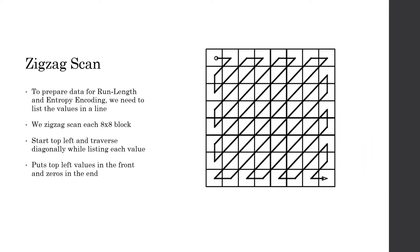The next stage is the zigzag scan. We zigzag scan because we have 8x8 blocks and we need to prepare them for run length and entropy encoding by putting those 8x8 blocks into a list of values. When we zigzag scan each 8x8 block, we start at the top left and traverse diagonally while listing each value. This puts the low-frequency quantized coefficients in the front and the high-frequency quantized coefficients in the back. As discussed, the majority of the high-frequency values are rounded to zero, preparing us for run length encoding.